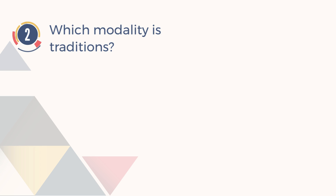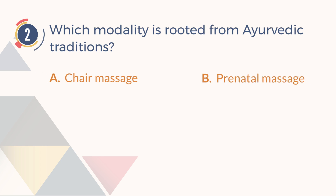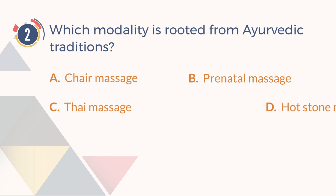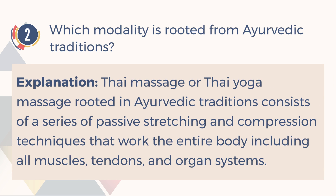Number 2. Which modality is rooted from Ayurvedic traditions? A. Chair massage. B. Prenatal massage. C. Thai massage. D. Hot stone massage. The answer is C, Thai massage. Thai massage, or Thai yoga massage, rooted in Ayurvedic traditions, consists of a series of passive stretching and compression techniques that work the entire body including all muscles, tendons, and organ systems.